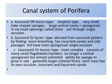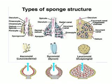The leucon type is the most complex, consisting of many small flagellated chambers with no longer a central spongocoel, but with almost unlimited ability for the sponge to grow in size. Generally larger colonial forms — each mass has its own osculum with incurrent and excurrent canals. The types of sponges and their examples are shown in this figure.